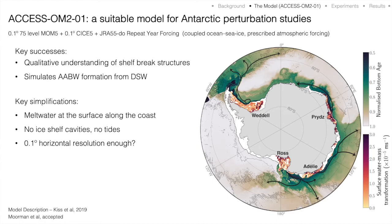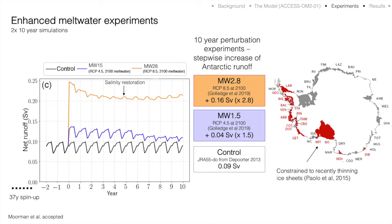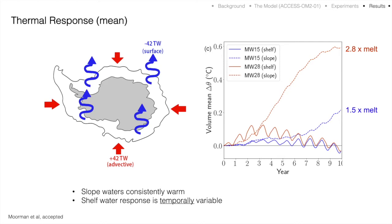That said, it is not a perfect model. A key simplification relevant to our study is that meltwater is input in an unrealistic manner — instead of being input at depth and interacting with an ice shelf cavity, meltwater is just input at the surface effectively like river runoff. We ran two 10-year perturbation experiments where we amplified runoff off Antarctica by about 1.5 times and 2.8 times the baseline in a stepwise manner, parallel to the control simulation, applied only to ice shelves in West Antarctica where ice shelf thinning has been observed in recent decades.